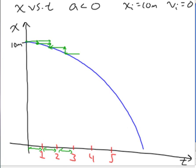And you'll see that your position is decreasing more and more rapidly, which indicates that your speed is increasing, or in this case, the velocity is becoming a larger and larger negative number.